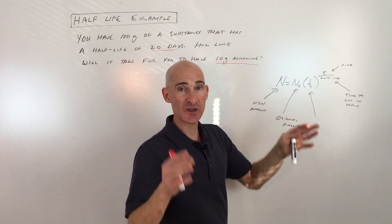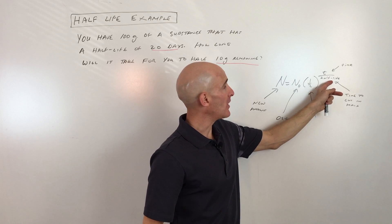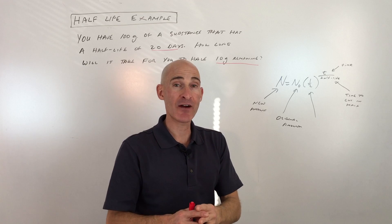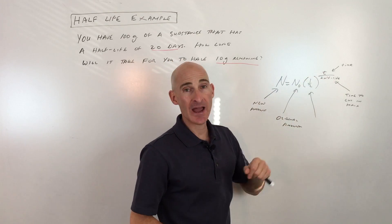One half is your base because it's cutting in half every t divided by the half-life. So t is the time and half-life is the time that it takes for it to break down and end up just with half of the original amount. And then n here is what you end up with after that amount of time.